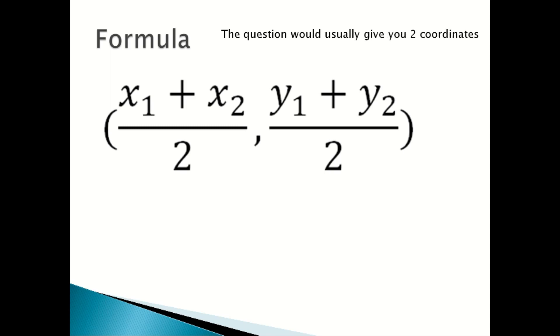The question would usually give you two coordinates. To know which is x₁ and which is x₂, the question would usually say find the midpoint of line AB. A would be x₁, y₁ and B would be x₂, y₂.